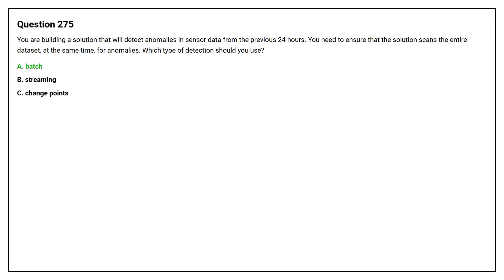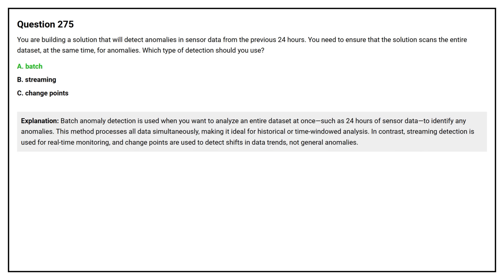The correct answer is Option A: Batch. Batch anomaly detection is used when you want to analyze an entire data set at once, such as 24 hours of sensor data, to identify any anomalies. This method processes all data simultaneously, making it ideal for historical or time-windowed analysis. In contrast, streaming detection is used for real-time monitoring, and change points are used to detect shifts in data trends, not general anomalies.